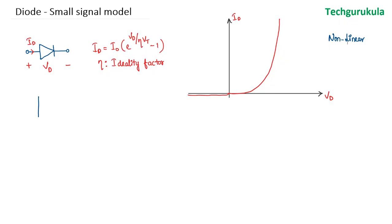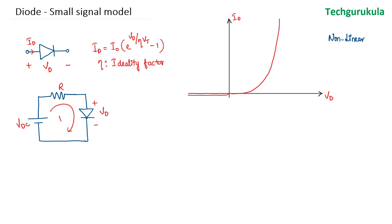Let's say we have a circuit where we are applying a DC voltage VDC, we have a current limiting resistor R, and the voltage across the diode is VD. The current that flows here we can say is IDC. We can write IDC is equal to VDC minus the voltage across the diode VD, over the current limiting resistor R. When VD is equal to zero, IDC will be equal to VDC over R.